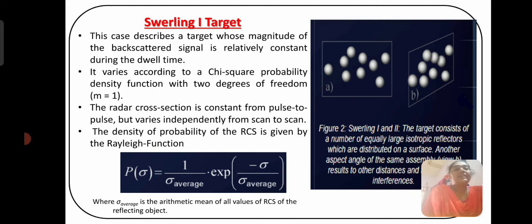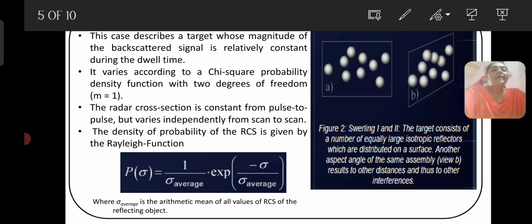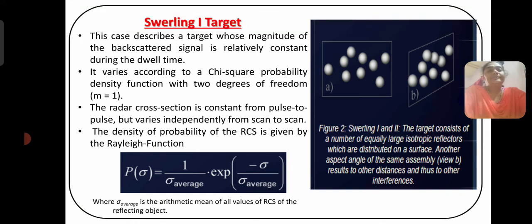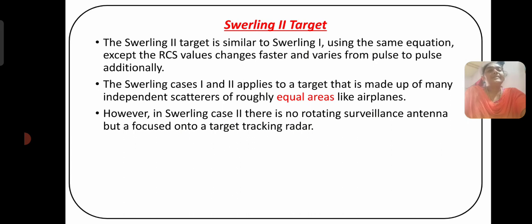In Swerling Cases 1 and 2, the target consists of a number of equally large isotropic reflectors distributed on the surface at other aspect angles. Swerling Case 2 is similar to Swerling Case 1, using the same equation, except the radar cross-section value changes faster and varies from pulse to pulse additionally. Swerling Cases 1 and 2 apply to targets made up of many independent scatterers of roughly equal areas, like an airplane.